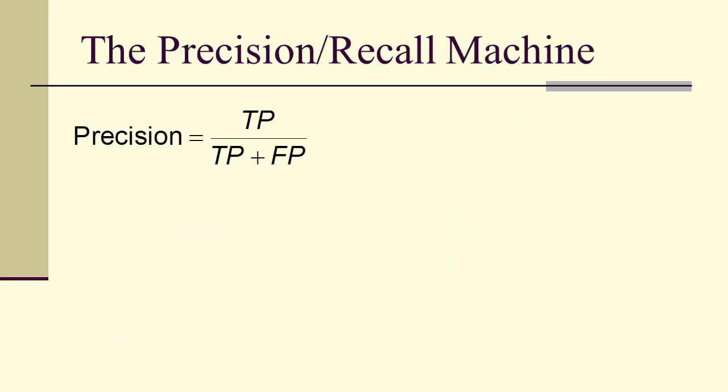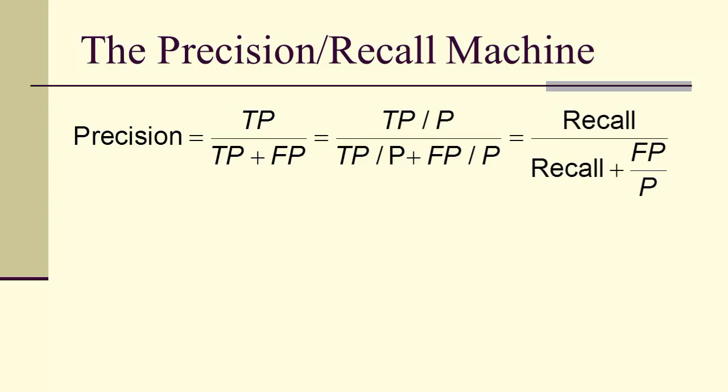Another way to look at this is to take the precision, divide throughout by the number of actual positives, and that will give us the recall over the recall plus the false positives over the actual positives. So what's going to cause the precision to go down is the false positives.